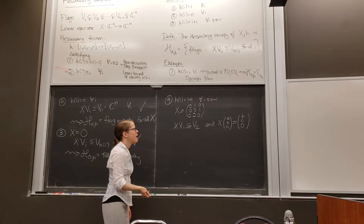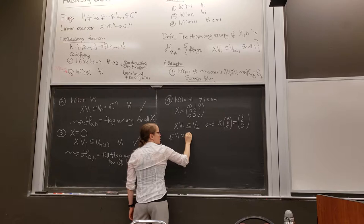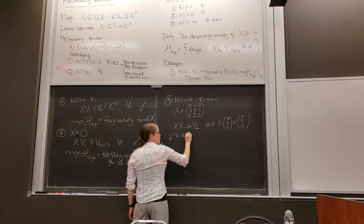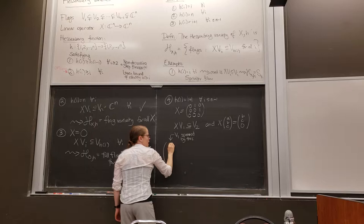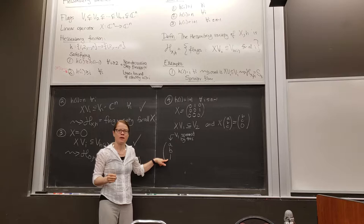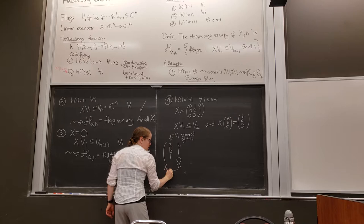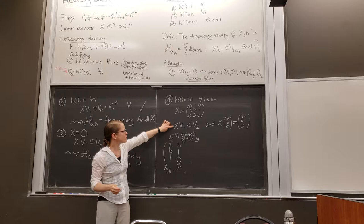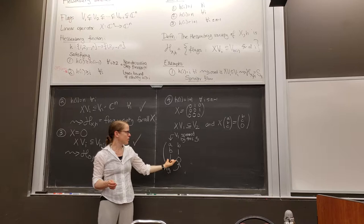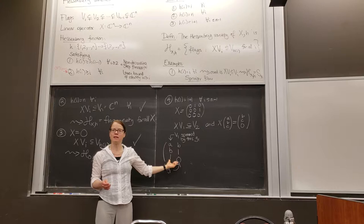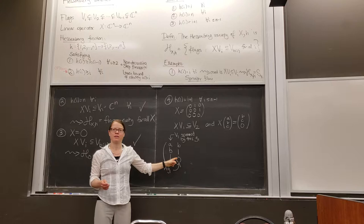Let's try building some Schubert cells. Suppose V_1 is spanned by a vector with a nonzero third entry. What does x do to it? x sends it up. Now we have this rule that x sends the line into the plane. This is true if and only if these two vectors are linearly independent — they span a plane. So this condition is satisfied if and only if this vector spans the plane.